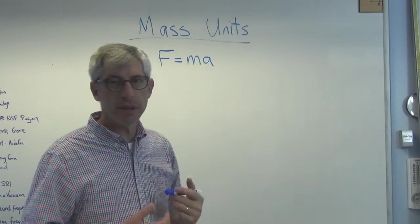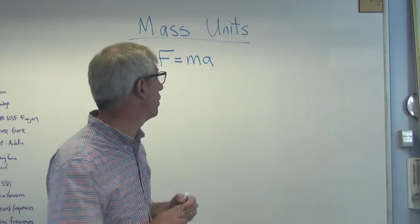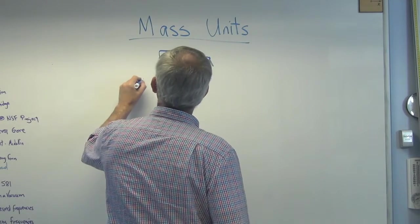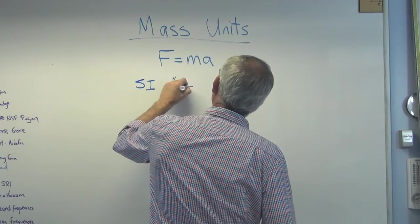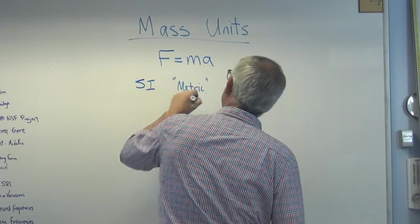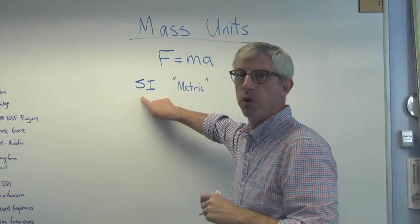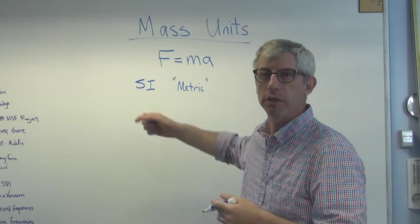Now, there's basically two systems of units in the world right now. The big one, of course, is SI. This is metric. And it's the international system, or in French, it's système international. That's why it's called SI.